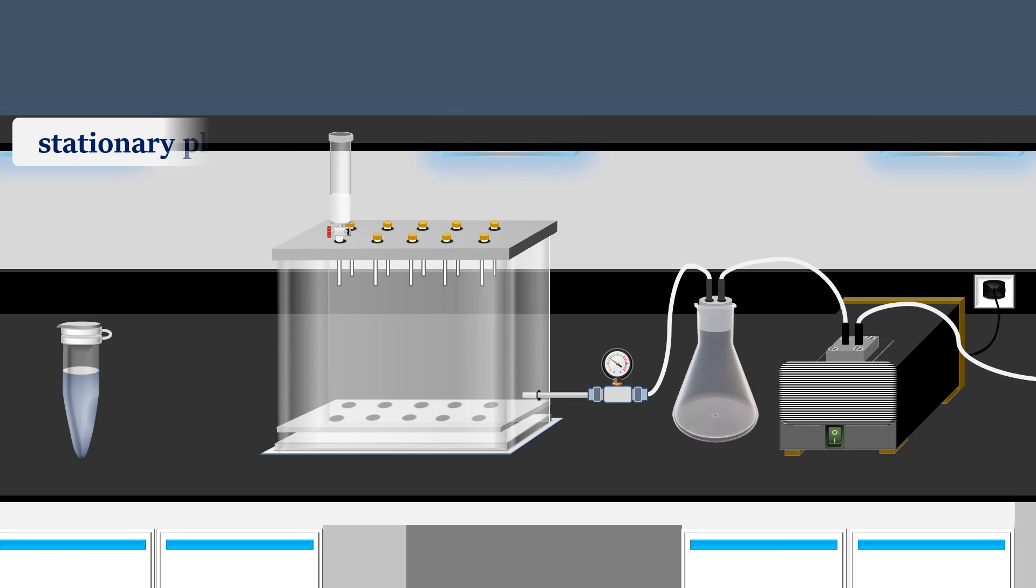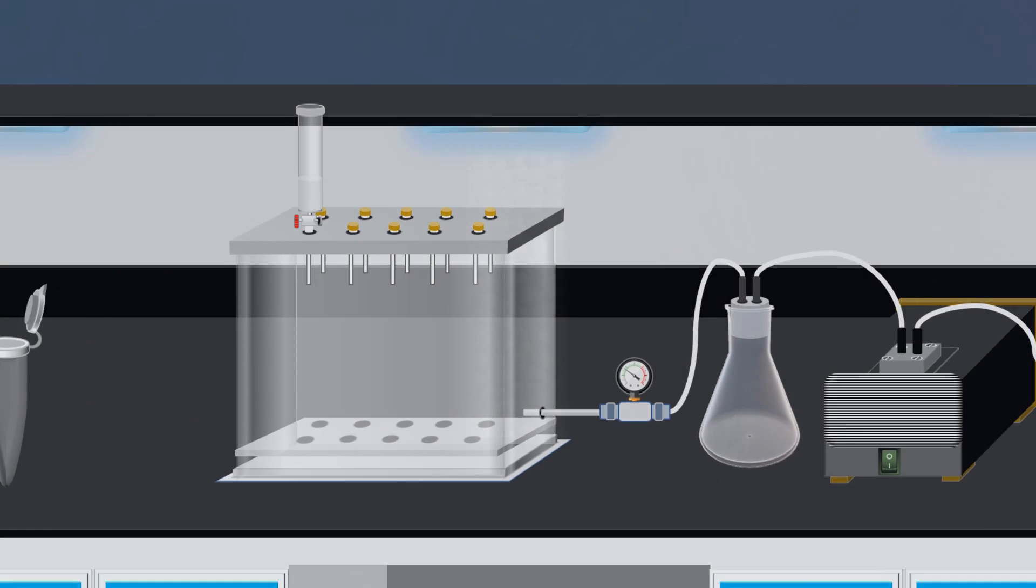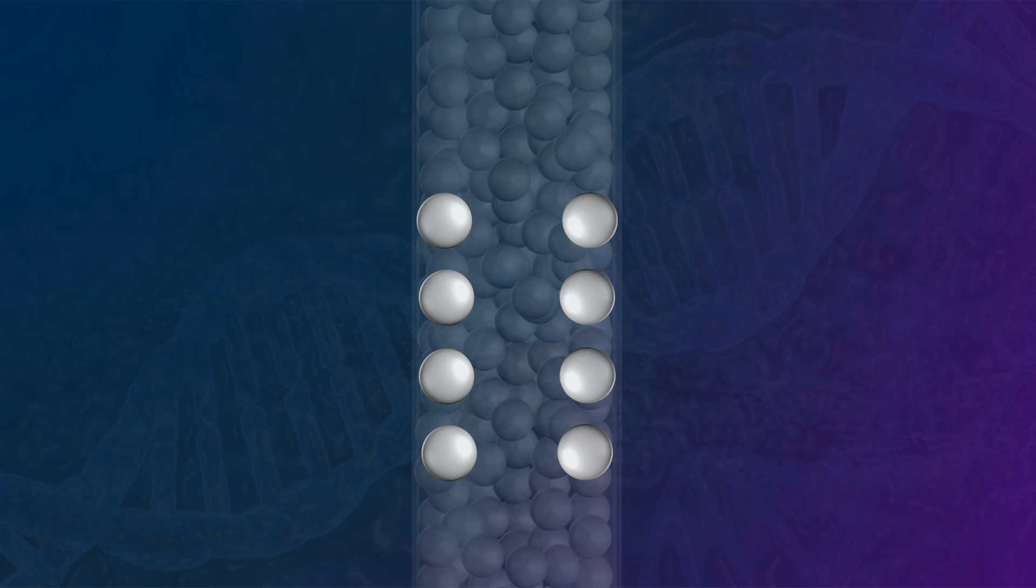For the separation process, a stationary phase is employed, consisting of a specific support medium to which the protein will bind covalently. The solution of the protein mixture is directed through the stationary phase. Our desired protein will bind to the stationary phase, while others will pass through.